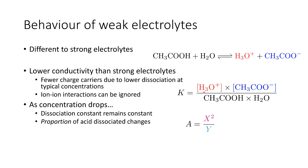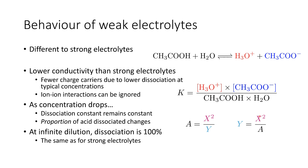As the concentration drops, the dissociation constant remains constant at a given temperature, but the proportion of acid dissociated changes. If we increase the stock concentration by 4, the hydroxonium ion concentration only increases by 2. Conversely, if we decrease the concentration by 100, the concentration of charge carriers only decreases by 10. Because of this, we get greater and greater dissociation at lower and lower dilutions, to a point where at infinite dilution we have 100% dissociation and get the same behaviour as for strong electrolytes.